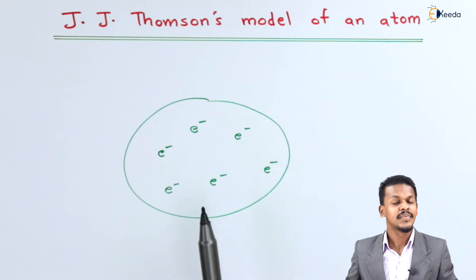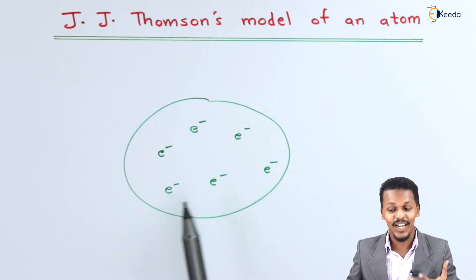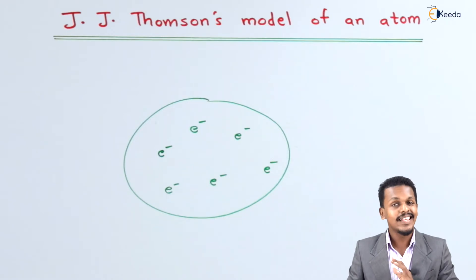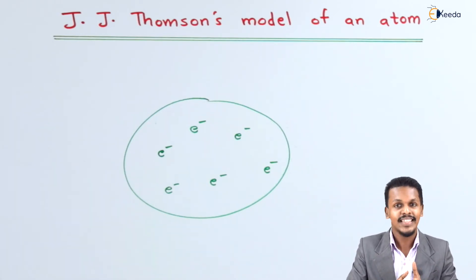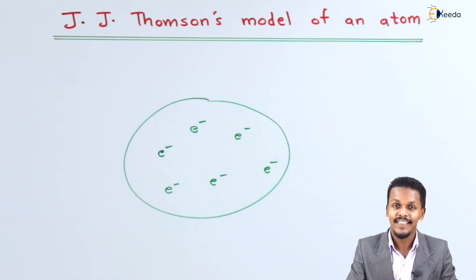This model was not accepted because the limitations were greater than its predictions. First, it could not explain the stability of an atom because the electrons and protons are not arranged systematically. Second, this model cannot explain the alpha particle scattering experiment done by Rutherford. There are several limitations, which is why it was not accepted.